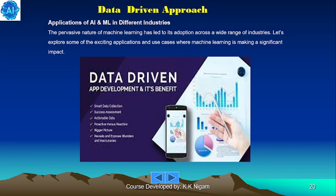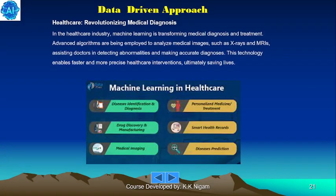Application of AI and ML in different industries. The pervasive nature of machine learning has led to its adoption across a wide range of industries. In healthcare, machine learning is transforming medical diagnosis and treatment. Advanced algorithms are being employed to analyze medical images such as X-rays and MRIs, assisting doctors in detecting abnormalities and making accurate diagnoses. The technology enables faster and more precise healthcare interventions, ultimately saving lives.